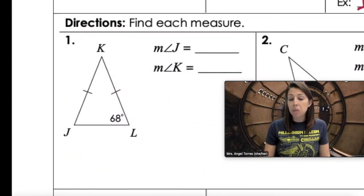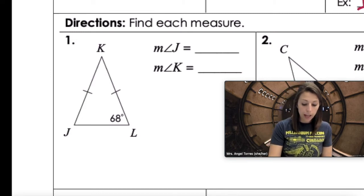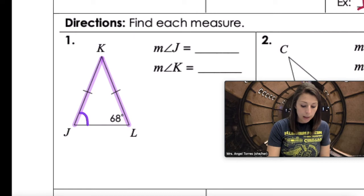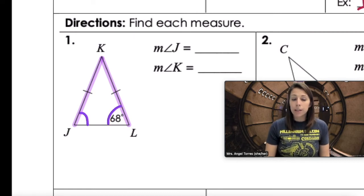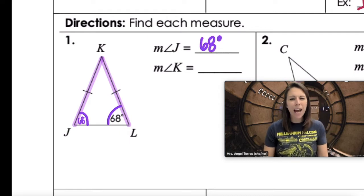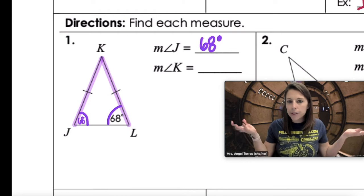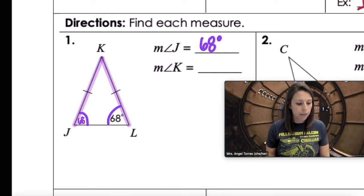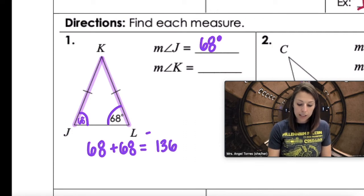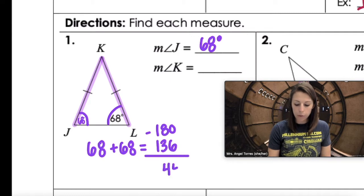Let's take this information and use it. In triangle number one, we're given two congruent sides. If the sides are congruent, the base angles are also congruent. So if angle L is 68 degrees, angle J is also 68 degrees. To find angle K, all three angles add up to 180 degrees, so 68 plus 68 is 136, and 180 minus 136 gives us 44 degrees.